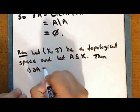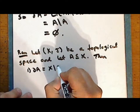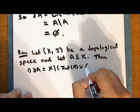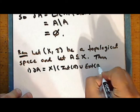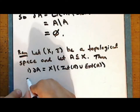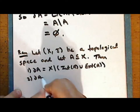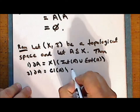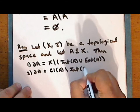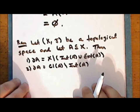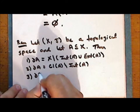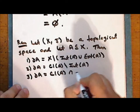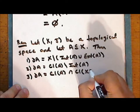By definition, the boundary is the complement of the union of the interior of A with the exterior of A. The boundary is also the closure of A set minus the interior of A. The boundary of A is also the intersection of the closure of A with the closure of the complement of A.